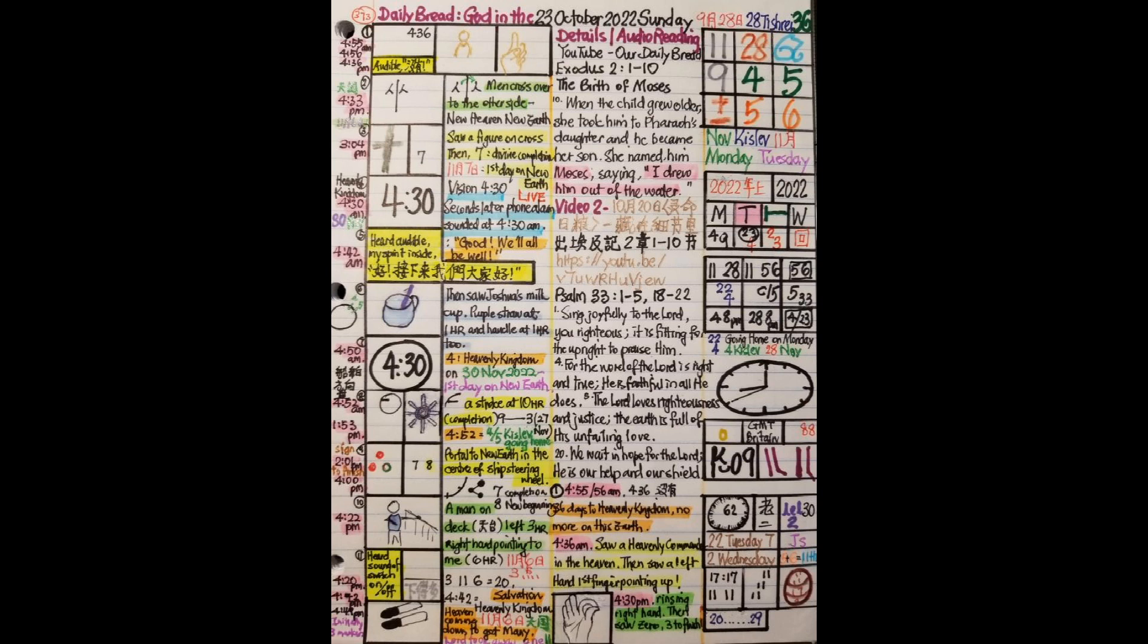I saw a cross and a figure on the cross. The Lord reminds us it is through his death that we are purchased by his blood. It is through his death that we can have the rapture, we can have the salvation. Today we can have the eternal life. Next is seven, which means divine completion. We will be on the other side for the first day on the lunar calendar 11th month on the 7th day.